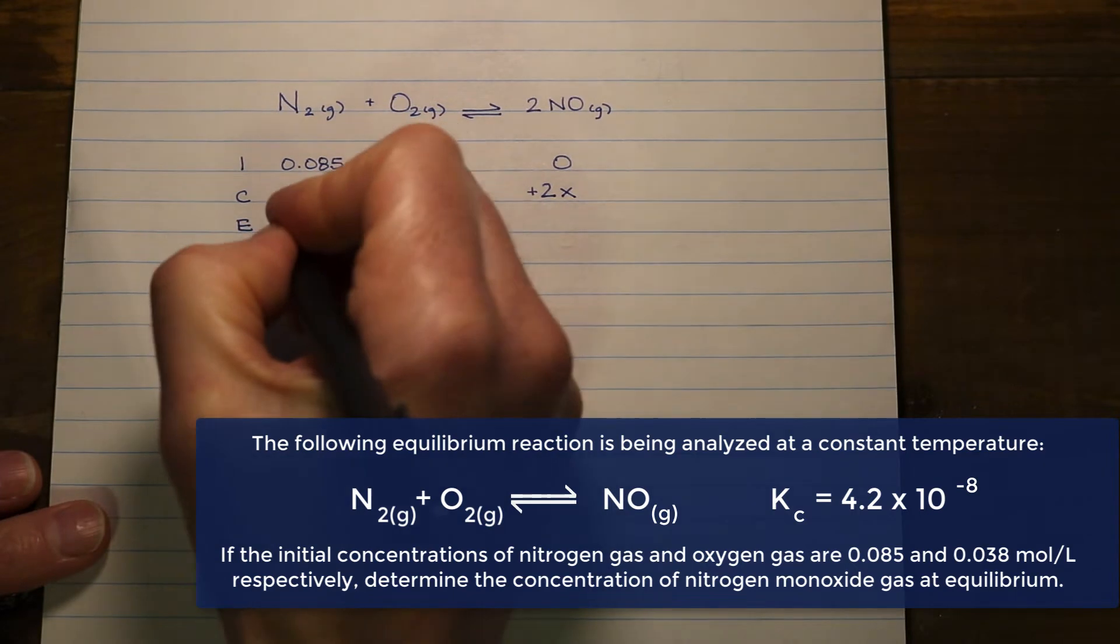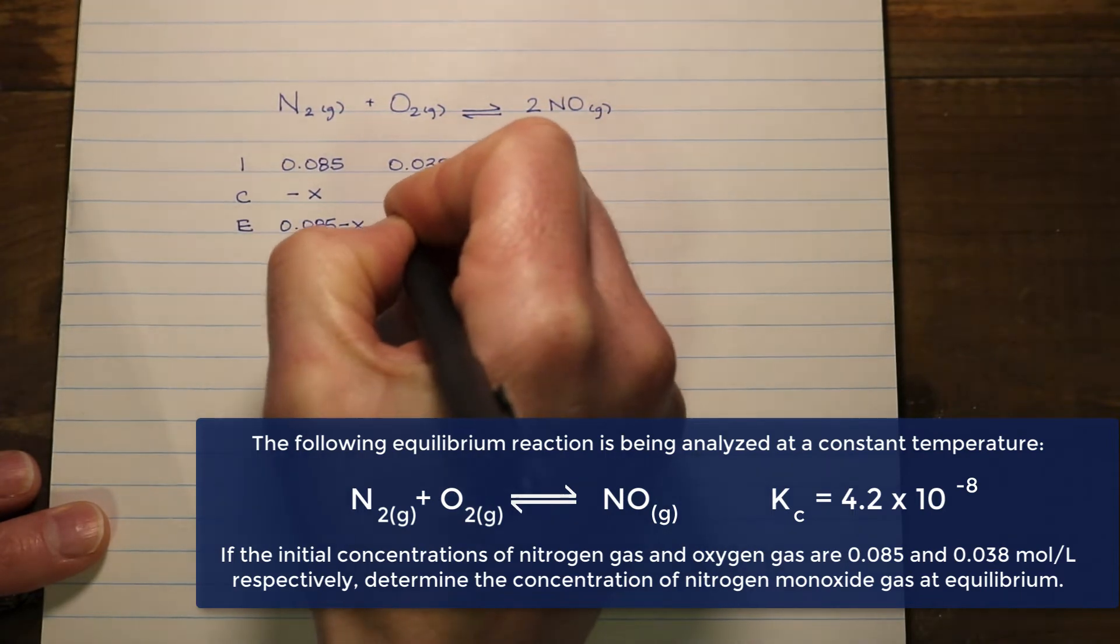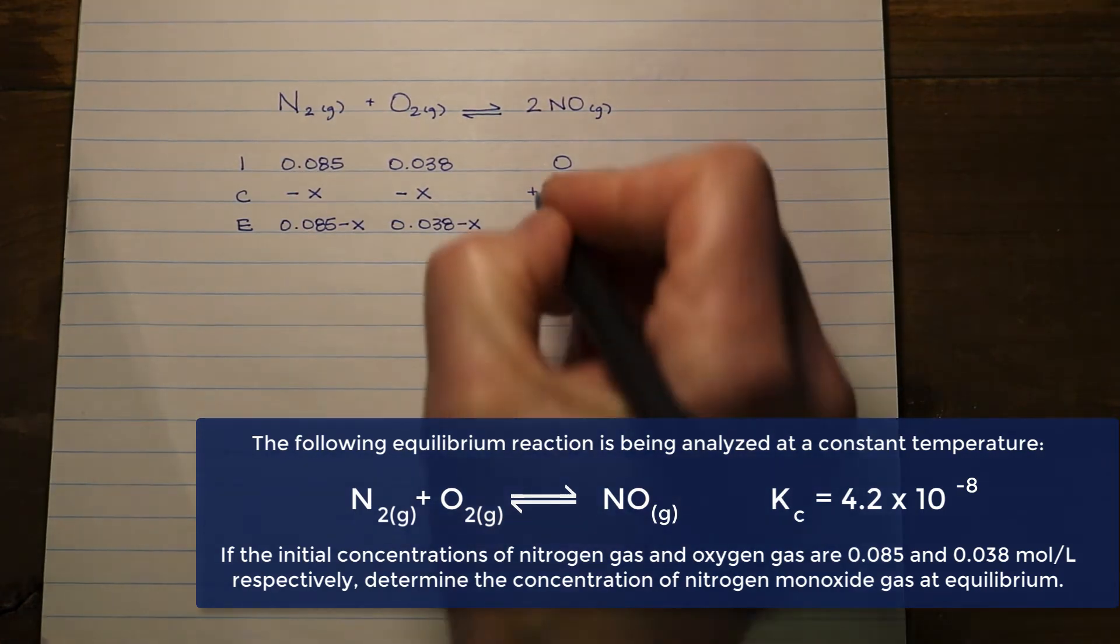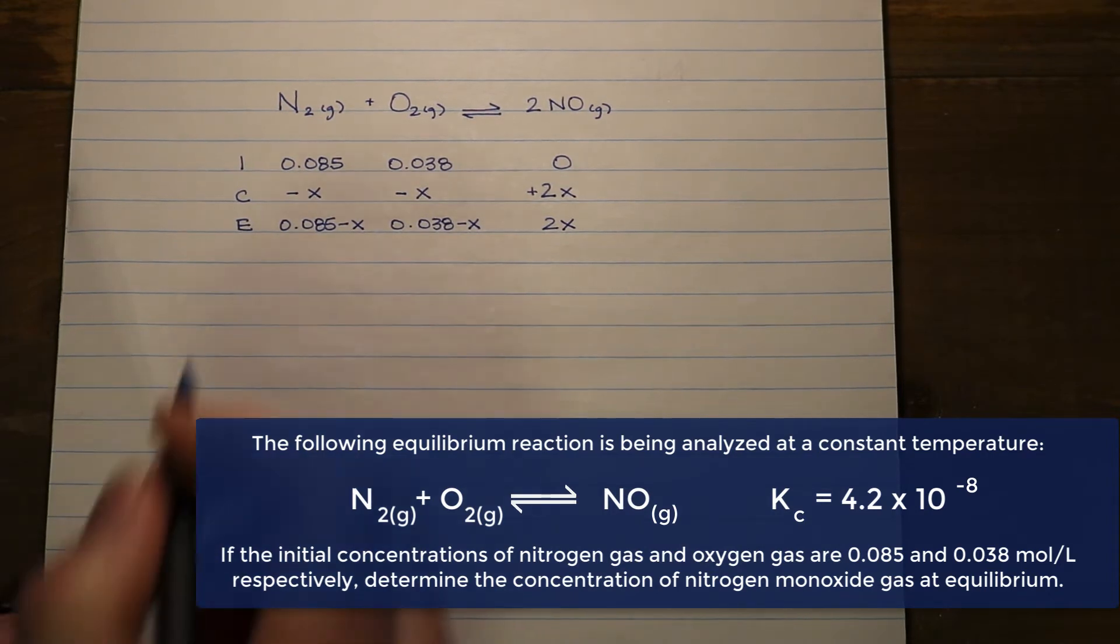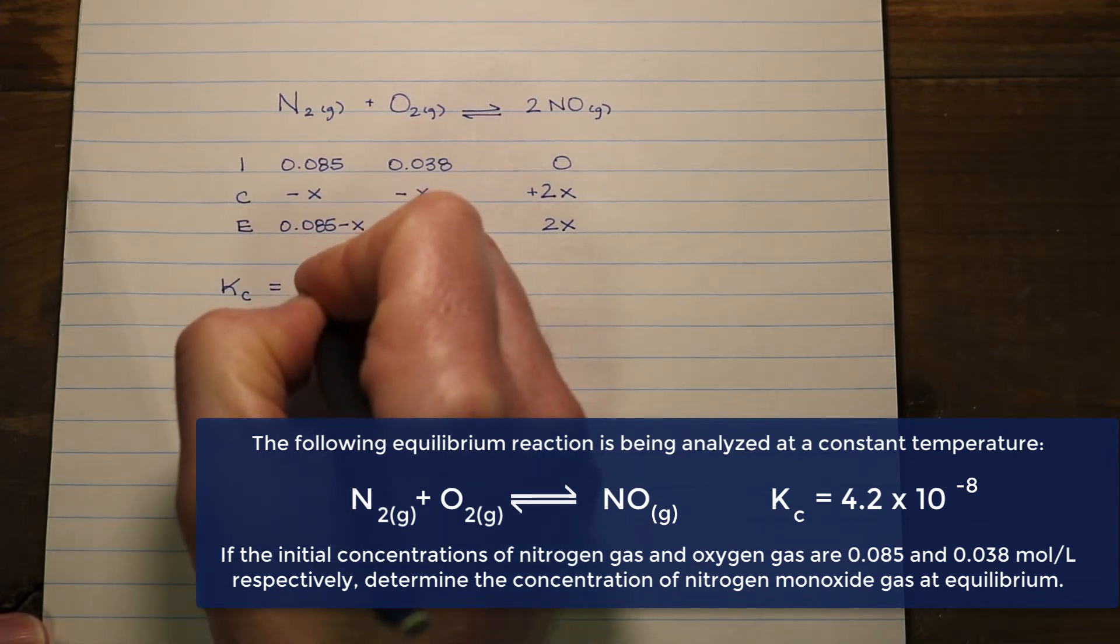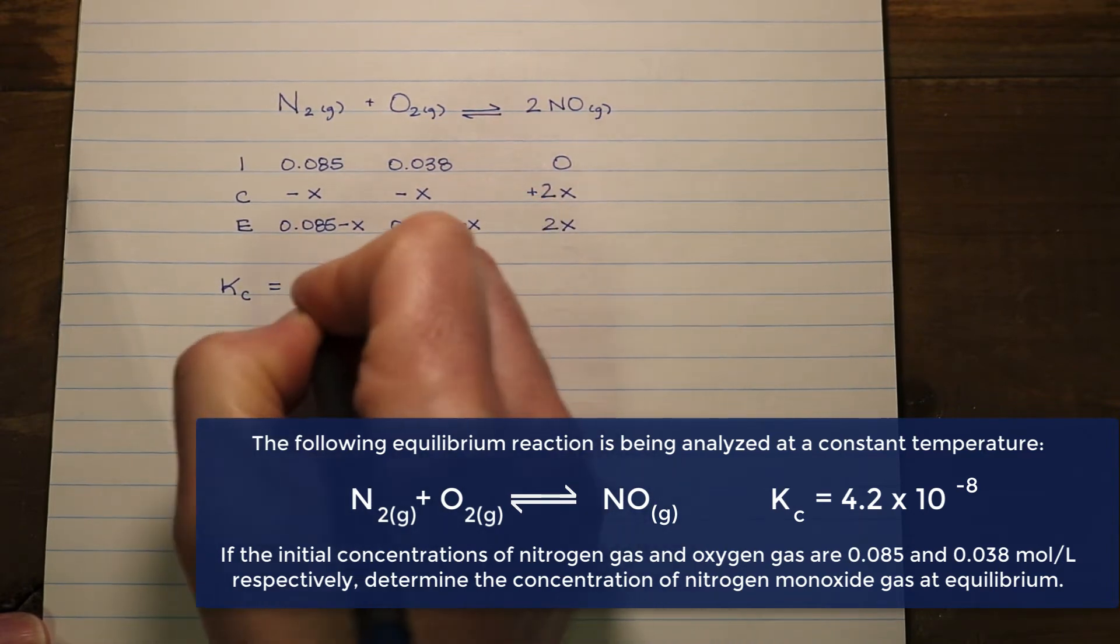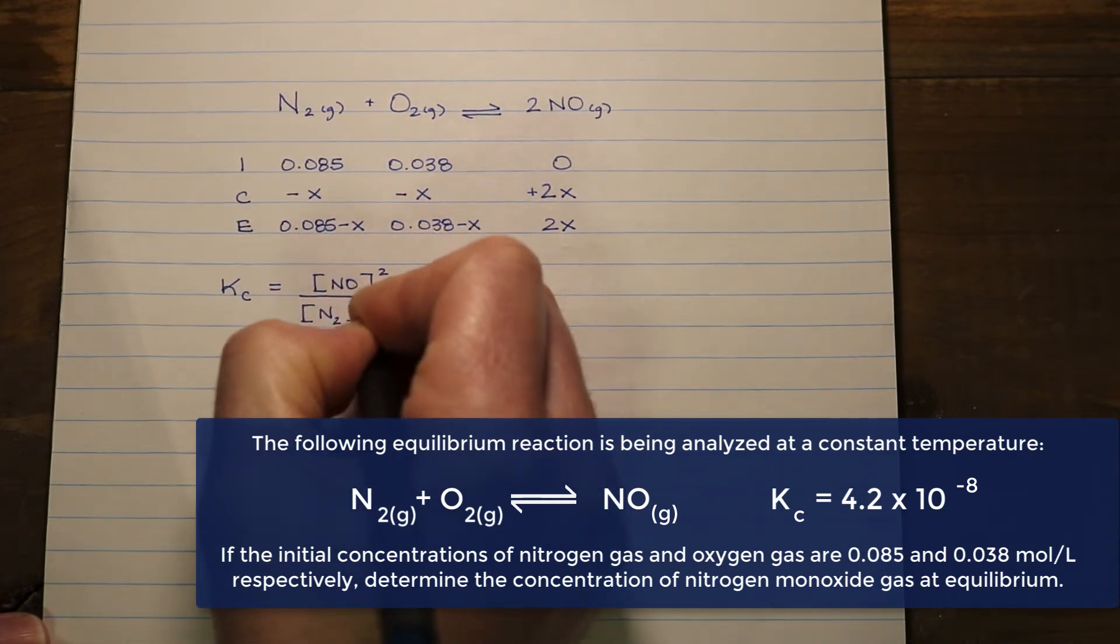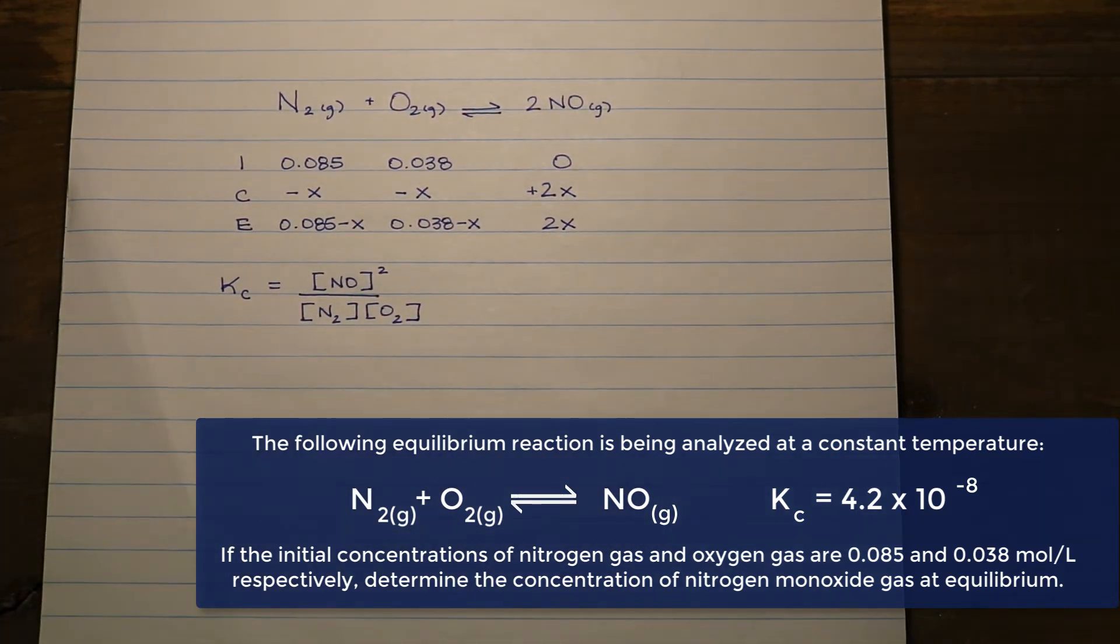The equilibrium concentrations can be determined by taking the sum of the I and the C. So we get 0.085 minus x, 0.038 minus x, and 2x for our product side. Now we can look at our equilibrium expression for this reaction. It's products over reactants raised to the coefficient, so products squared over the concentration of each of the reactants to the exponent one.